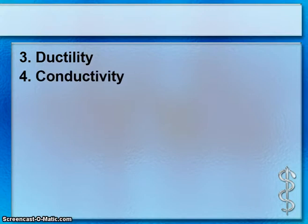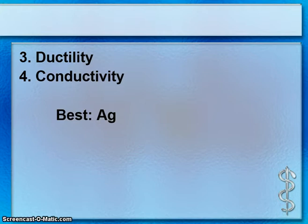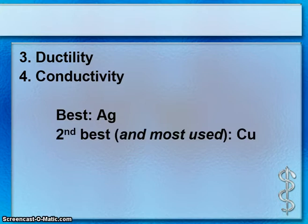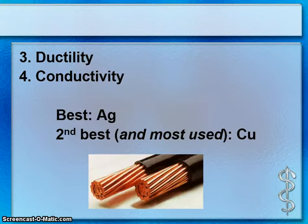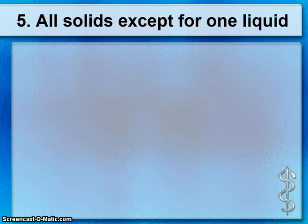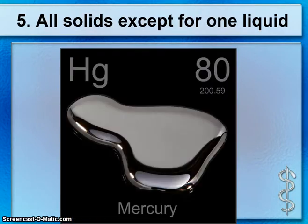The most conductive metal on the chart is silver. Of course, silver isn't used often because it's expensive. The most used and second-best conductor is Cu, which stands for copper. All metals are solids at room temperature except for one special liquid metal called mercury.